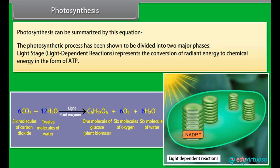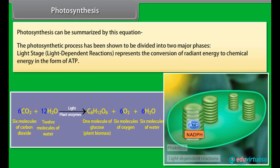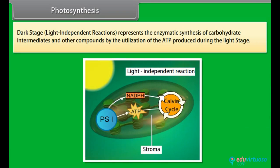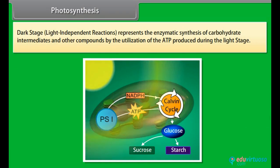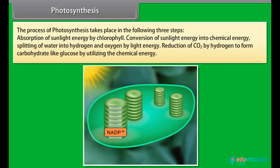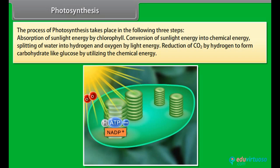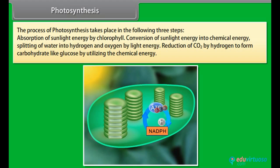The photosynthetic process is divided into two major phases. The light stage (light-dependent reactions) represents the conversion of radiant energy to chemical energy in the form of ATP. The dark stage (light-independent reactions) represents the enzymatic synthesis of carbohydrates and other compounds using the ATP produced during the light stage. The three steps of photosynthesis are: absorption of sunlight energy by chlorophyll, conversion of sunlight energy into chemical energy and splitting of water into hydrogen and oxygen, and reduction of CO2 by hydrogen to form carbohydrates like glucose.